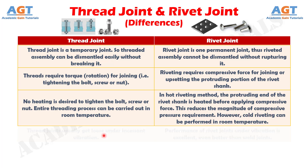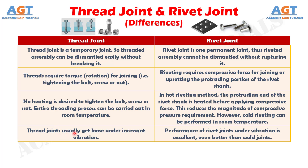Number four: thread joints usually get loose under incessant vibration, whereas the performance of rivet joints under vibration is excellent — even better than weld joints.